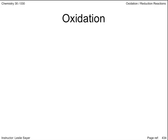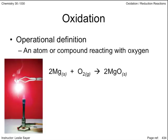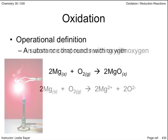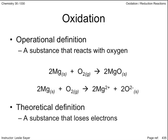Chemists originally defined oxidation as any chemical reaction with molecular oxygen. An operational definition describes what something does. Magnesium burns very brightly, and the product of this reaction is magnesium oxide. Turning the equation into an ionic equation, it's easy to see how the movement of electrons has influenced this reaction. A theoretical definition is one that attempts to explain why a phenomenon occurs. The theoretical definition of oxidation, then, is the loss of electrons.